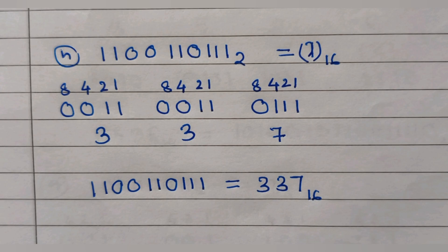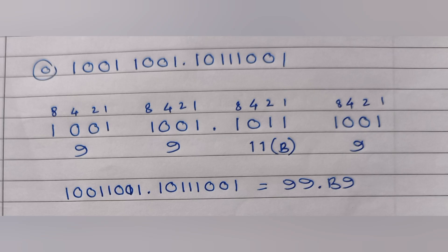In this sum we have to convert a fractional binary number into hexadecimal. The digits on the left side of the decimal are grouped from the right hand side: groups are 1001 and 1001. The digits on the right side of the decimal are grouped from the left hand side: groups are 1011 and 1001. Adding values in each group: first group 8 plus 1 equals 9, second group also 9, third group 8 plus 2 plus 1 equals 11 which is B, and last group is 9. The final answer is 99.B9 with base 16.